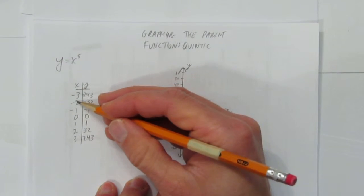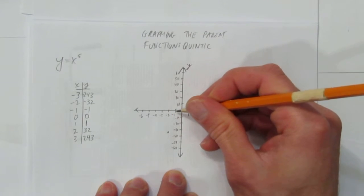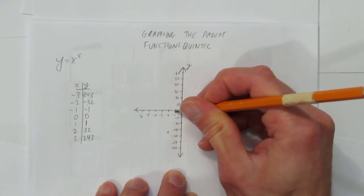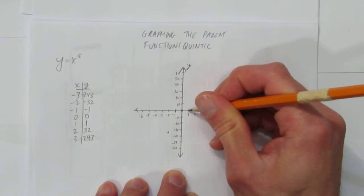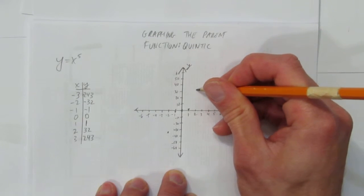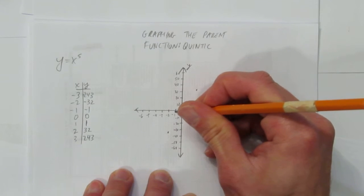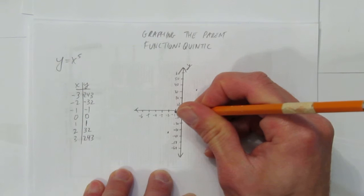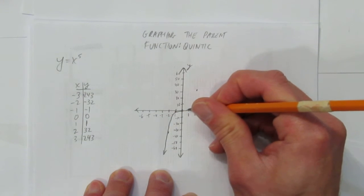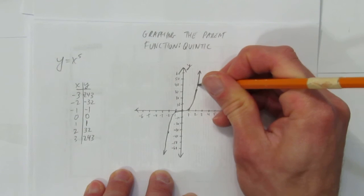Now let's plot the points, starting with negative 2 at negative 32 — that's about here. Negative 1 is at negative 1, really close to the axis since this tick is negative 10. It comes right through the origin at 0, 0. Then over to 1, at a height of 1, very close to the x axis again. But at 2, you jump up to 32. That's the characteristic quintic shape: it comes in gradually, then almost immediately starts curving steeply out. Easy to see the steep curve now — and the same thing on the negative side. It comes in and starts to curve, then steeply increases after 1, growing really tall and steep.